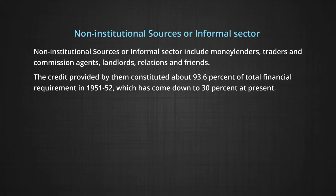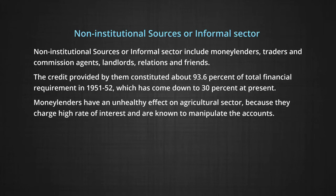This has come down to about 30 percent at present. Money lenders have an unhealthy effect on the agricultural sector because they charge high rates of interest and are known to manipulate accounts. In the event of non-payment, they acquire the lands of farmers and exploit labor by making them work without paying wages. With the development of banking and other financial institutions providing credit at competitive rates, money lenders are no longer an important source of credit in the rural economy.